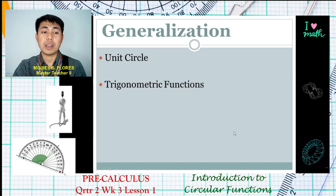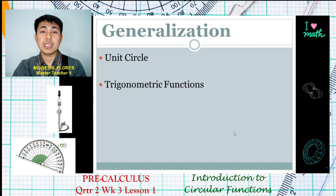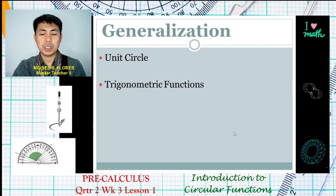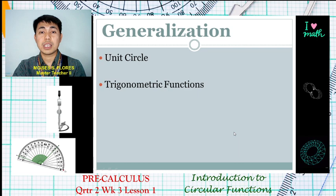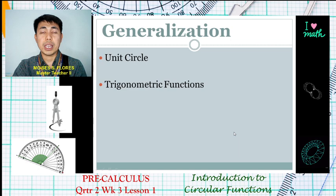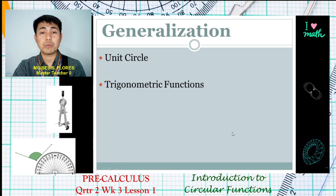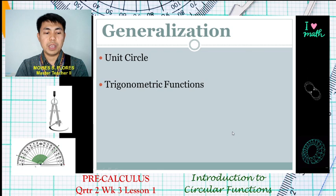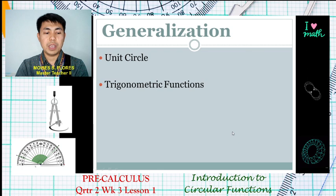We have introduced our circular functions — the six trigonometric functions: sine = y, cosine = x, tangent = y/x, and their reciprocals cosecant, secant, and cotangent. Hoping you have learned something today. Thank you for listening, have a nice day, see you on the next lesson, and don't forget to subscribe and like our videos.